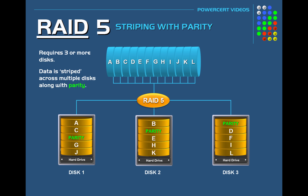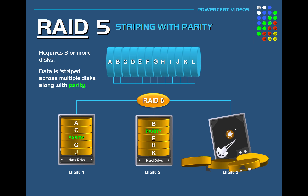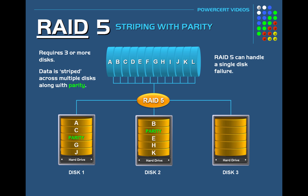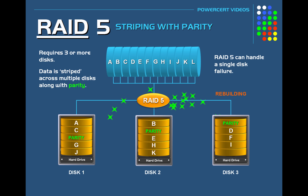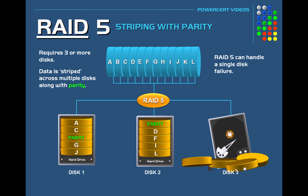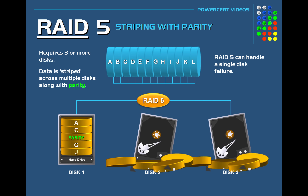In a RAID 5 setup if one disk were to fail you would not lose any data, because RAID 5 is designed to handle a single disk failure. All you would have to do is replace the failed disk with a new one, and then RAID 5 would use the parity information from the other disks to rebuild the data on the new hard drive. However, if two disks were to fail at the same time in a RAID 5 setup, all the data would be lost, because RAID 5 is not designed to handle two disk failures at the same time — it can only handle one disk failure at a time.